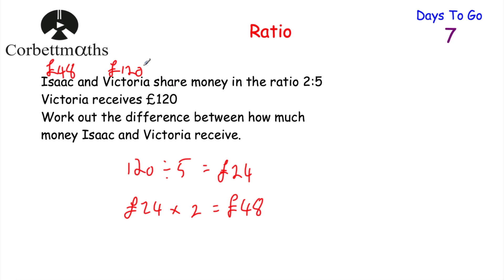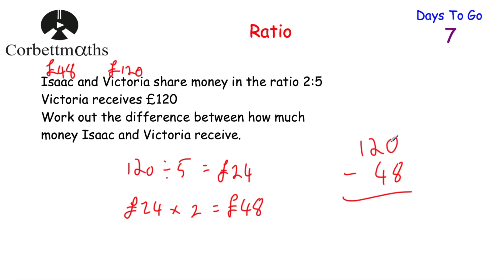We can check: 48 to 120 cancels down to 2 to 5 — correct. The question asks for the difference, so we do 120 take away 48. Borrowing to subtract: we get a difference of £72. So the difference in the amount of money they received is £72.